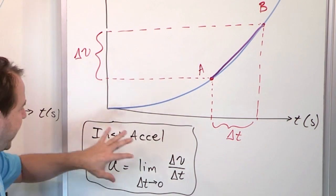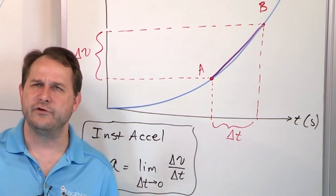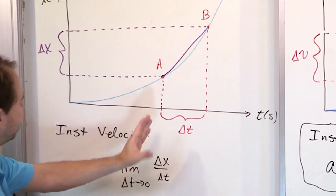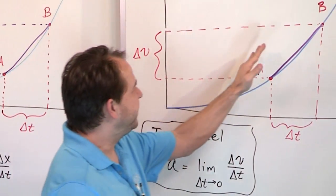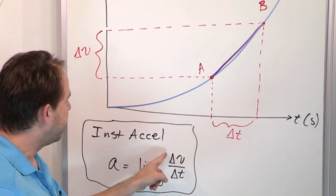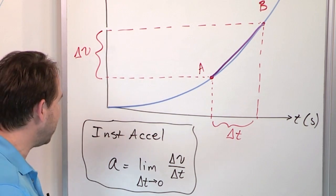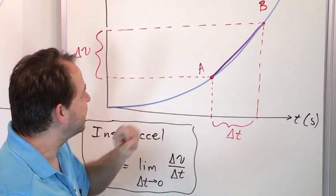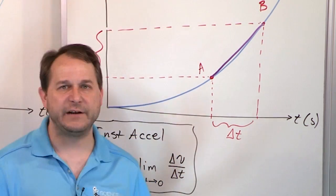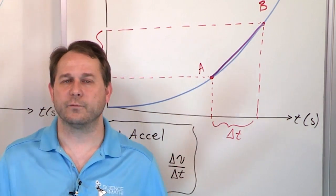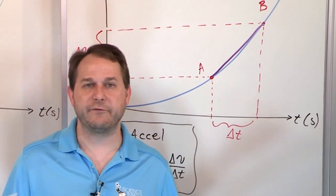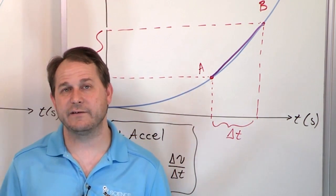I could have just written this on the board — that's what most books do. They say 'here's acceleration, it's a limit,' and you don't know what it means and you toss it aside. But it's very logical, and this is how calculus was invented. If you're in a calculus class, you'll recognize this as the definition of the derivative. You've been learning calculus the whole time — I just never told you that. When you take this limiting process, it's what we call a derivative. That covers about half of calculus one. If you've never seen it, you just learned the basics of calculus one.